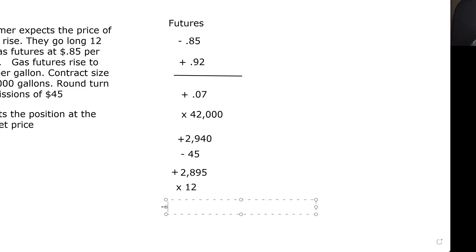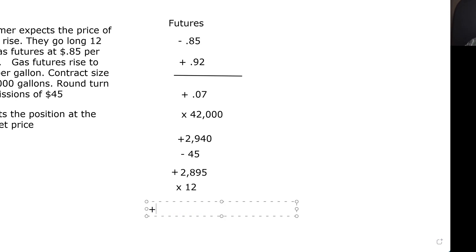So our answer is a profit of $34,740. Since it's a plus all the way, we stick with the plus — there's our profit. I hope that helps. I'll do hedging next time. Let's get this Series 3 down. We can do this — it's not that hard if you do it little by little.